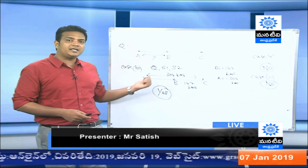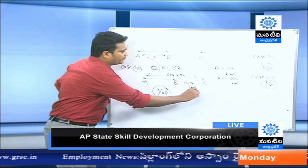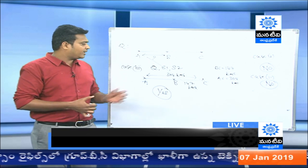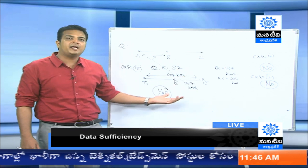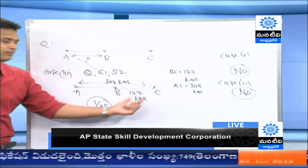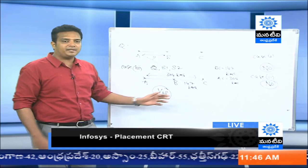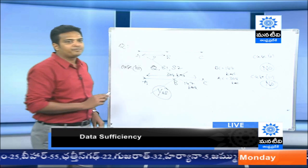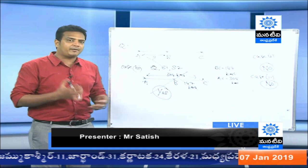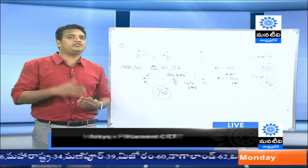Please do not do the subtraction approach — that is not how data sufficiency works. Do not simply subtract 147 from 304 to get 157 as the answer for AB. That is the wrong method. You have to read the question again and understand it properly. Ninety percent of students make this mistake, but don't do that.